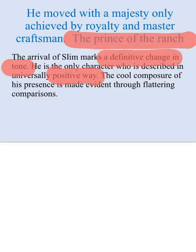Steinbeck uses a metaphor to describe Slim: 'He is the prince of the ranch.' It creates the idea that he is someone who has authority - an authority that is deserved, based on something other than who his dad is. The boss has authority because of his economic status; Curly's authority is vicarious, through his dad. But Slim's authority is innate - it's about who he is, not what he wears or what his economic status is.